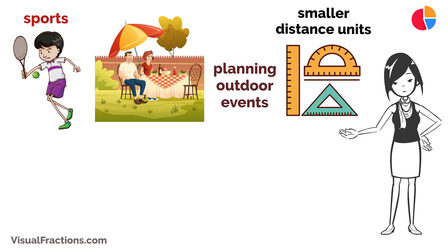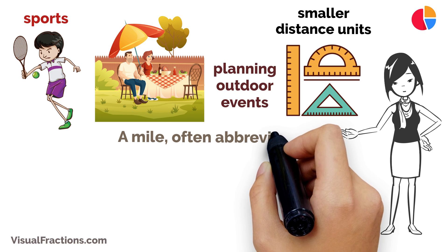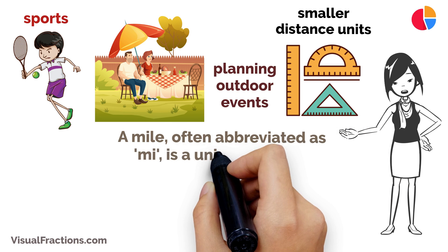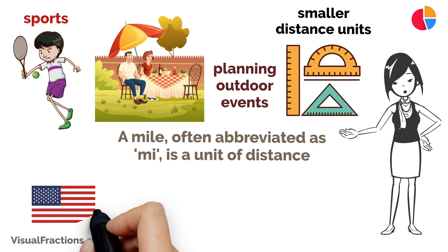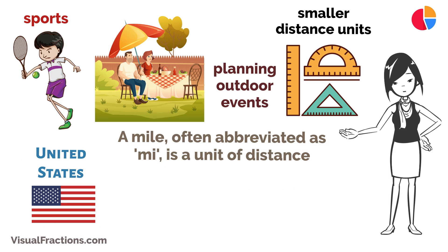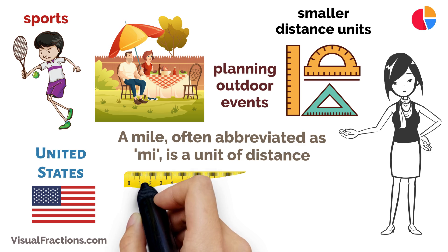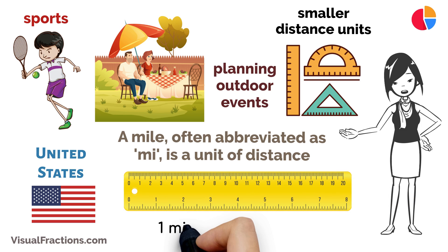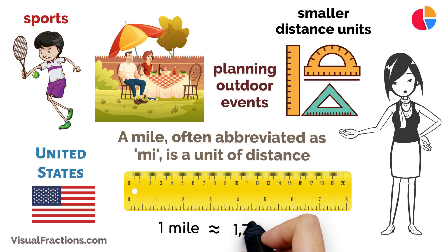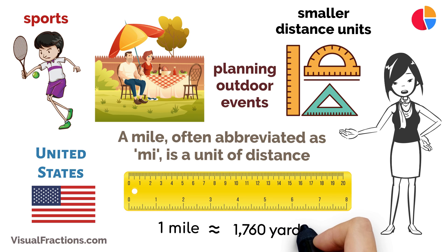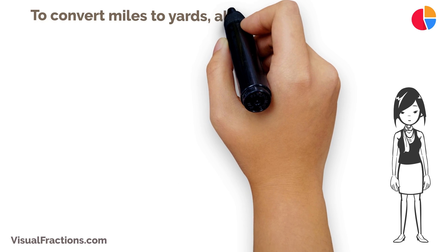Let's start with the basics. A mile, often abbreviated as mi, is a unit of distance used in the United States and a few other countries. A yard, represented as yd, is a smaller unit of distance commonly used for measuring shorter distances. One mile is equal to approximately 1,760 yards.